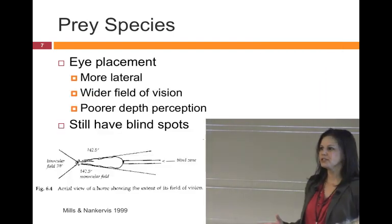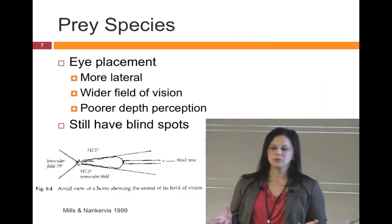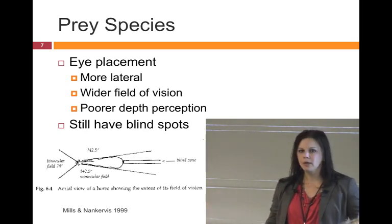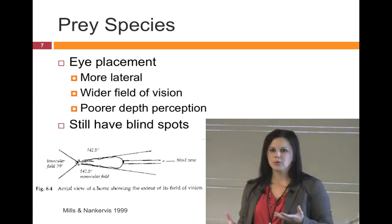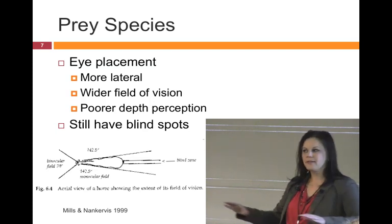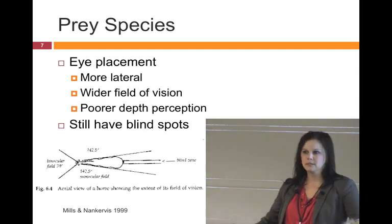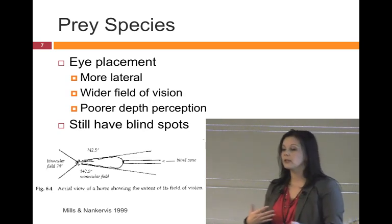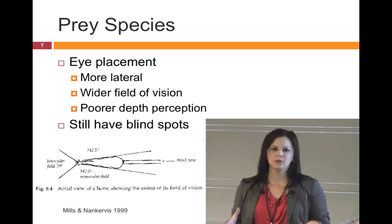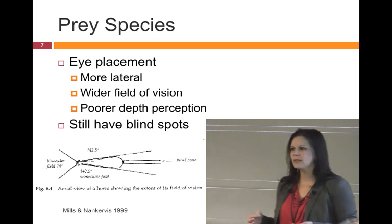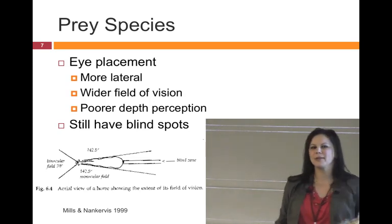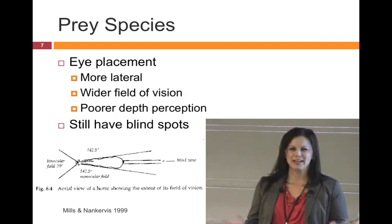If we're looking at prey species, we see differences in how they're built. Eyes are more lateral on the side of their face so they can see a wider array around them, versus predators who have eyes in front. Most dogs and cats are built more like predators. Prey species have poor depth perception because they want to scan around them. But all animals have blind spots, and nobody likes to be snuck up on their blind spot.